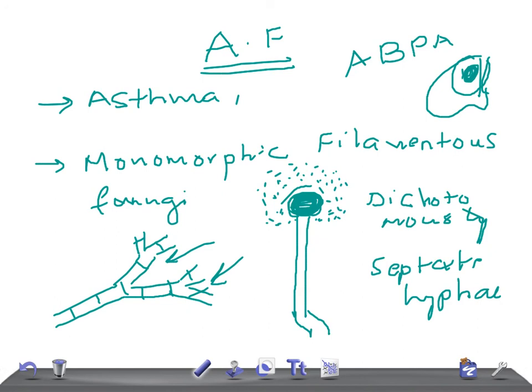The septate hyphae branch at acute angles — a very important point. Treatment is with voriconazole or amphotericin B. Thank you so much for watching this video, take care.